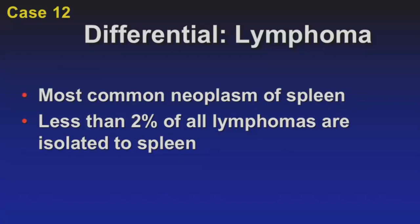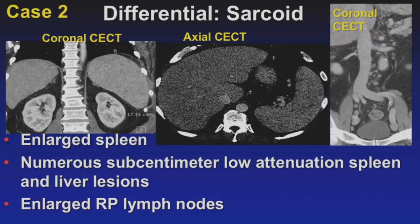The final differential for multiple splenic lesions is sarcoid — something we're very used to diagnosing in the chest, but which can have intra-abdominal involvement. Findings here include an enlarged spleen with numerous sub-centimeter low-attenuation lesions throughout both the spleen and liver, and several enlarged retroperitoneal lymph nodes. This patient had a known diagnosis of sarcoid but went on to liver biopsy to confirm involvement.